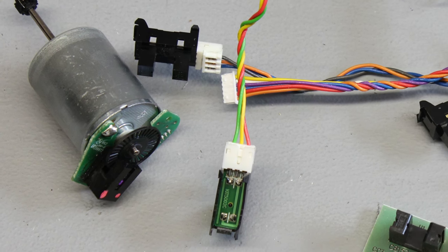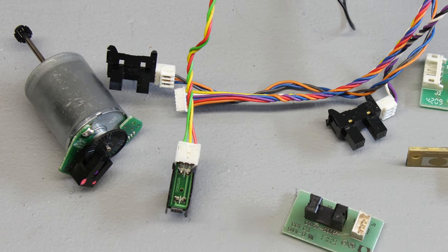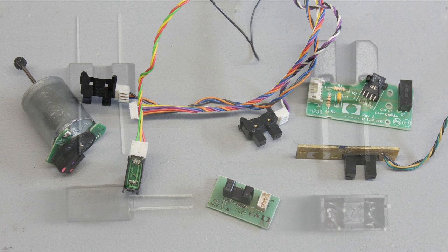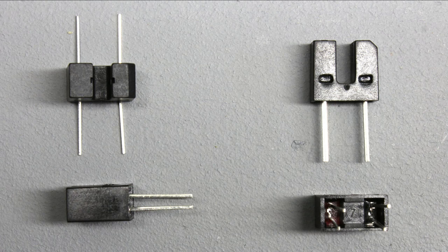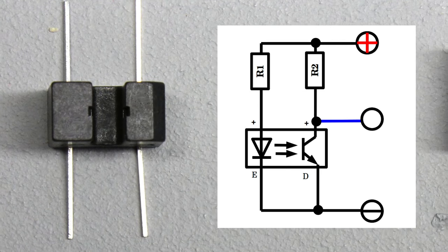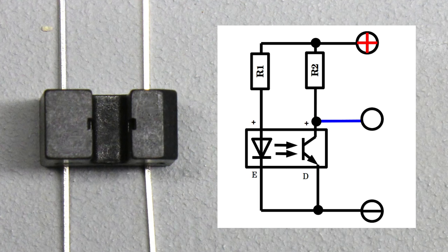In this video, I will demonstrate how to find out the pin configuration of transmissive optical sensors. The device shown here has four terminals. On one side there is an LED, usually emitting infrared light, and on the opposite side there is a light-sensitive transistor.